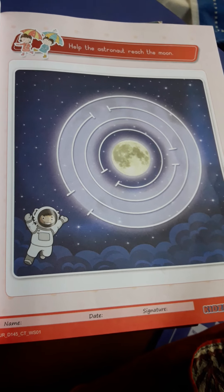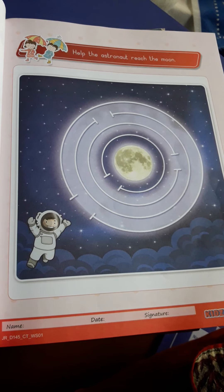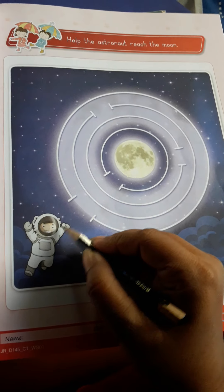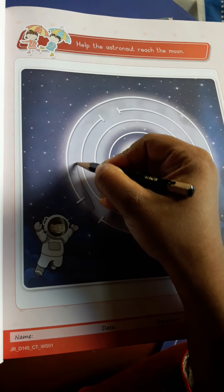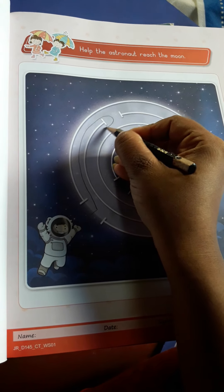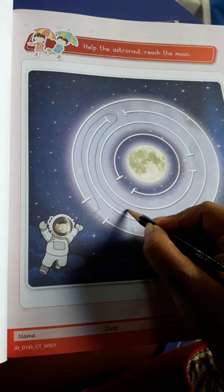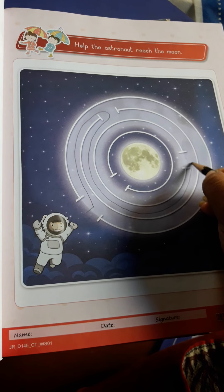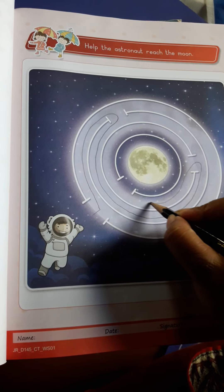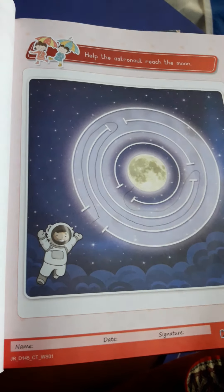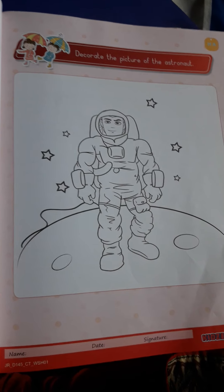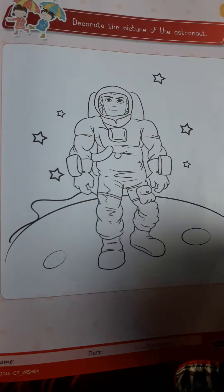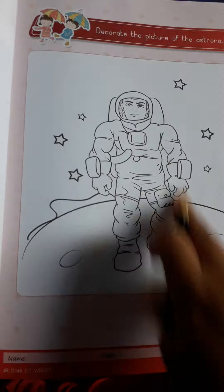Look at the instruction. Help the astronaut reach the moon. Then, done. One, decorate the picture of the astronaut. You have to decorate the picture of astronaut.